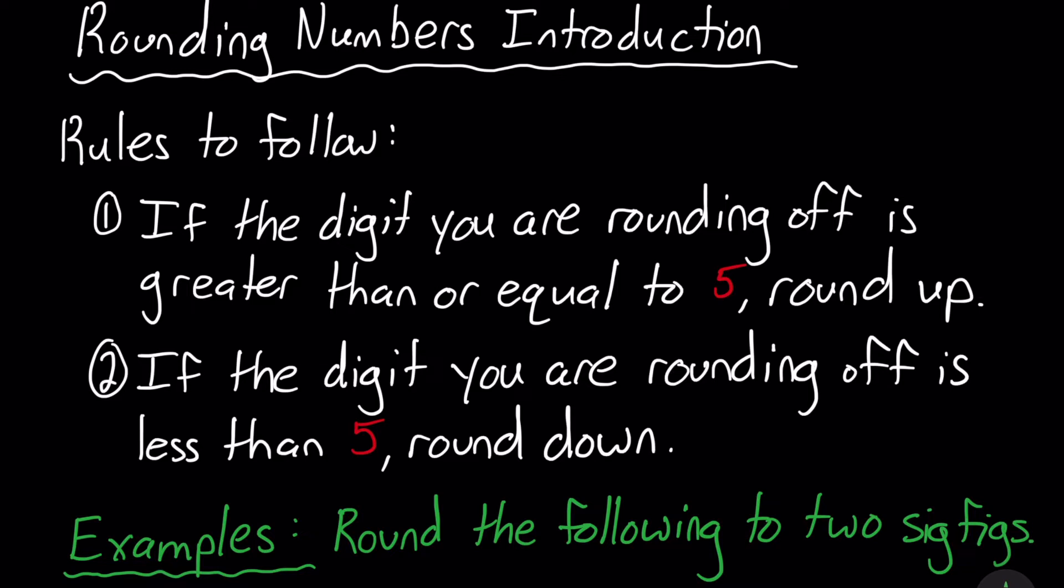So when rounding numbers, we're going to follow two main rules here. The first reads, if the digit you are rounding off is greater than or equal to 5, you are going to round up. So you're going to round up if that digit you are rounding off is greater than or equal to 5.